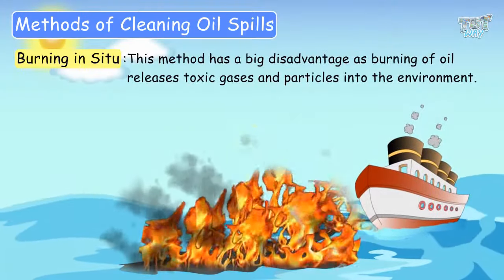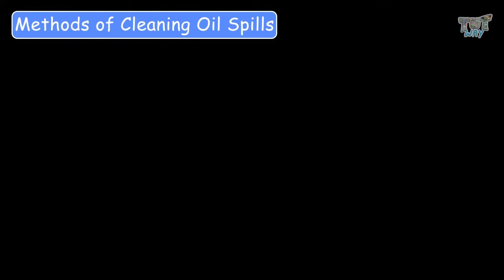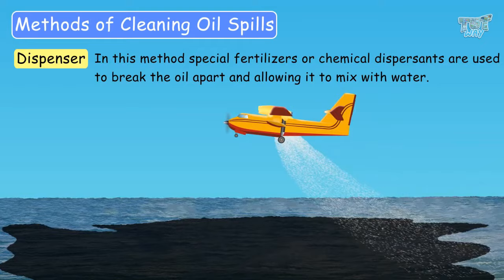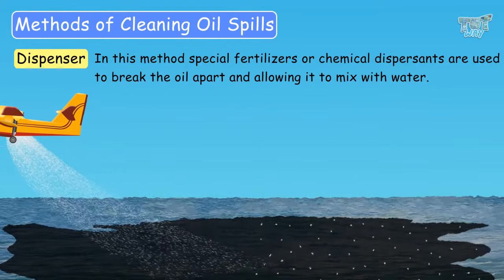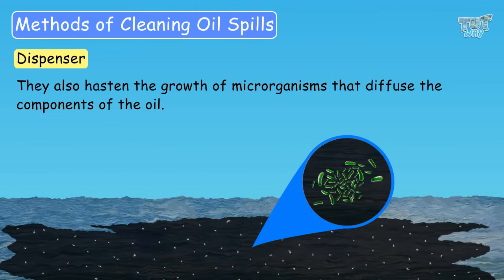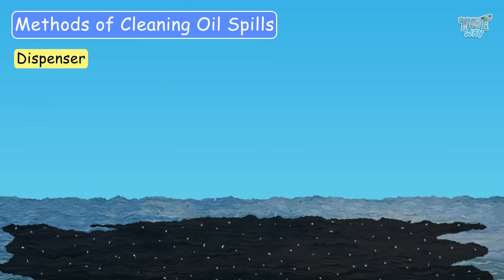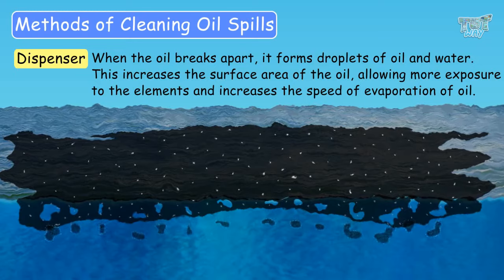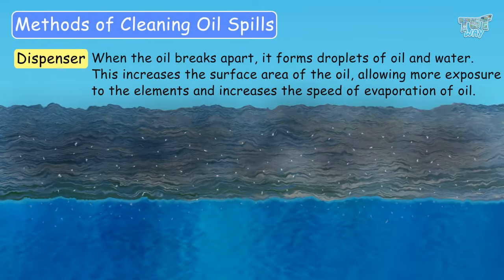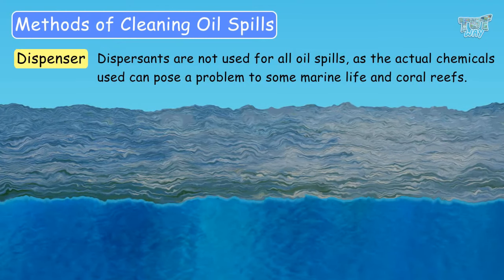This method has a big disadvantage as burning of oil releases toxic gases and particles into the environment. Another method for cleaning oil spills is using dispersants. In this method, special fertilizers or chemical dispersants are used to break the oil apart, allowing it to mix with the water faster. They also hasten the growth of microorganisms that diffuse the components of the oil. These dispersants are most effective if used within a couple of hours of the initial spill. When the oil breaks apart, it forms droplets of oil and water. This increases the surface area of the oil, allowing more exposure to the elements and therefore increasing the speed of evaporation of the oil. Dispersants are not used for all oil spills, as the actual chemicals used can pose a problem to submarine life and coral reefs.